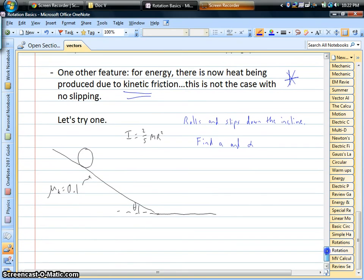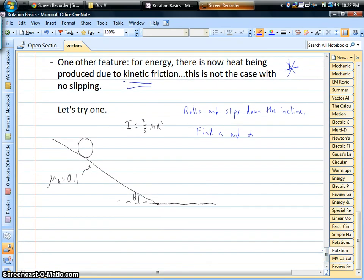Let's take a look at one of these. I will do one example of something rolling and slipping down an incline. Let's say it's a solid ball, so we know the inertia here, it's going to be two-fifths MR squared. Because they're slipping, we have to find A and alpha separately, the linear acceleration and the angular acceleration.